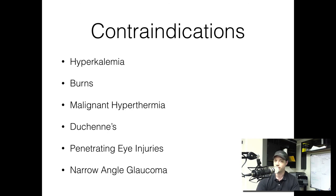So why wouldn't we give this drug? Because of its actions at the cellular level, we have to watch for patients who are hyperkalemic — someone who's being dialyzed, who has renal disorders, they're going to have excess serum potassium. Also, patients who are burned, that injury causes excess serum potassium. Malignant hyperthermia. Duchenne's muscular dystrophy — patients with these muscular disorders are going to have excess serum potassium. Penetrating eye injuries, because succinylcholine can cause increased intraocular pressure. And for the same reason, narrow-angle glaucoma is a contraindication, because they already have increased intraocular pressure and we don't want to make it worse.